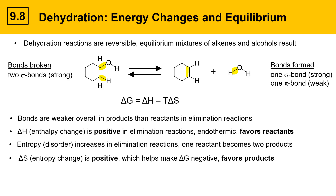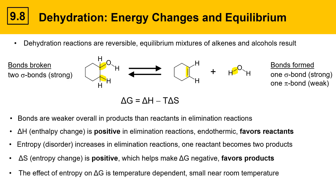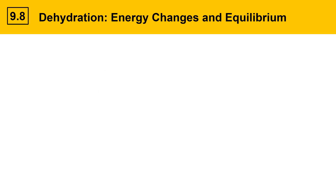Since delta S is positive, that helps make delta G negative, which favors products. So delta H and delta S are at odds in this reaction, and which factor is more important depends on temperature, since the effect of entropy on delta G is temperature dependent. Near room temperature, delta S has a relatively small impact, so delta G is positive and reactants are favored — disappointing if you want a good yield of alkene products.